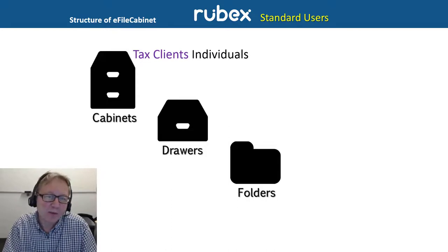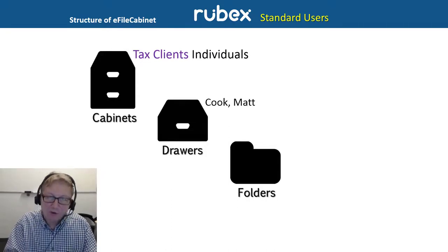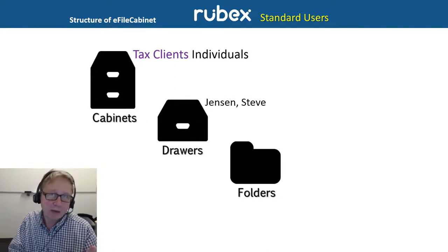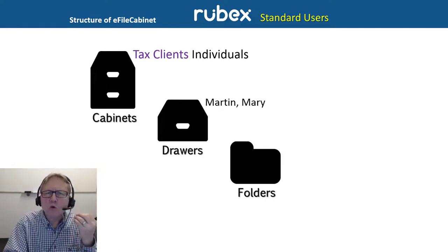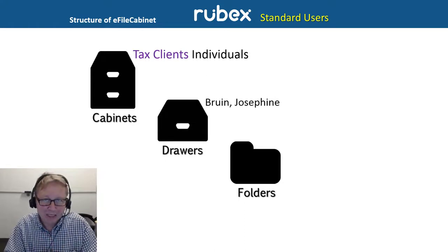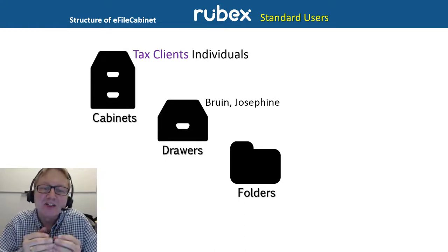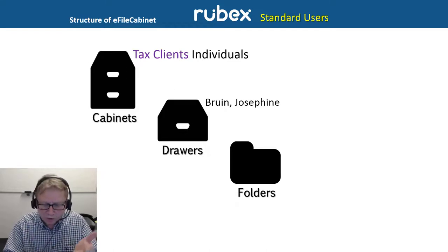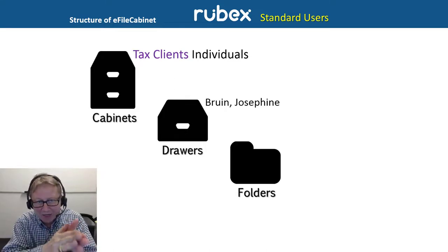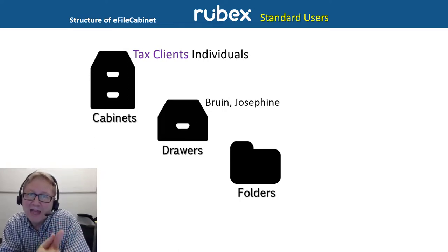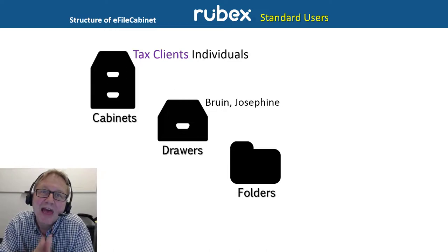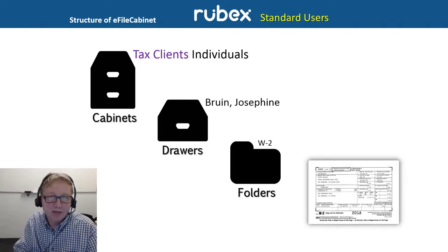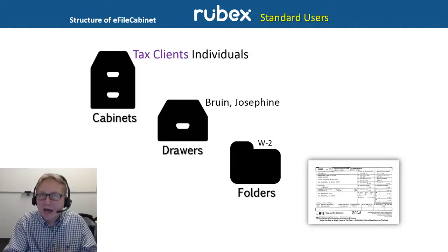If this were a Tax Client Individual cabinet, then the drawers would be the different clients. If this were an HR cabinet, the drawers would represent the different employees. If this were a medical cabinet, the drawers would represent different patients. One of the great advantages of electronic document management over physical document management is each person can have his or her own drawer — physically, that would be very difficult. Within the drawers, you have folders that can be set up by the use of templates. Because it's a tax cabinet with tax clients, the folders will reflect that industry. And inside the folders would be the documents themselves. So let's go into the software live and let me show you.